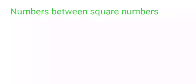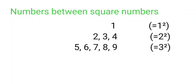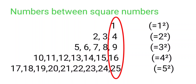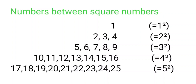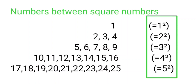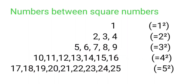Now let's look at non-square numbers between square numbers. Between two consecutive perfect squares, how many non-square numbers are there? Consider the numbers 1, 2, 3, 4, 5, 6, 7. The perfect squares among these are 1, 4, 9, 16, 25. The non-square numbers — like 2, 3, 5, 6, 7, 8, 10, 11, 12, up to 15, and 17 to 24 — are the non-perfect-square numbers.